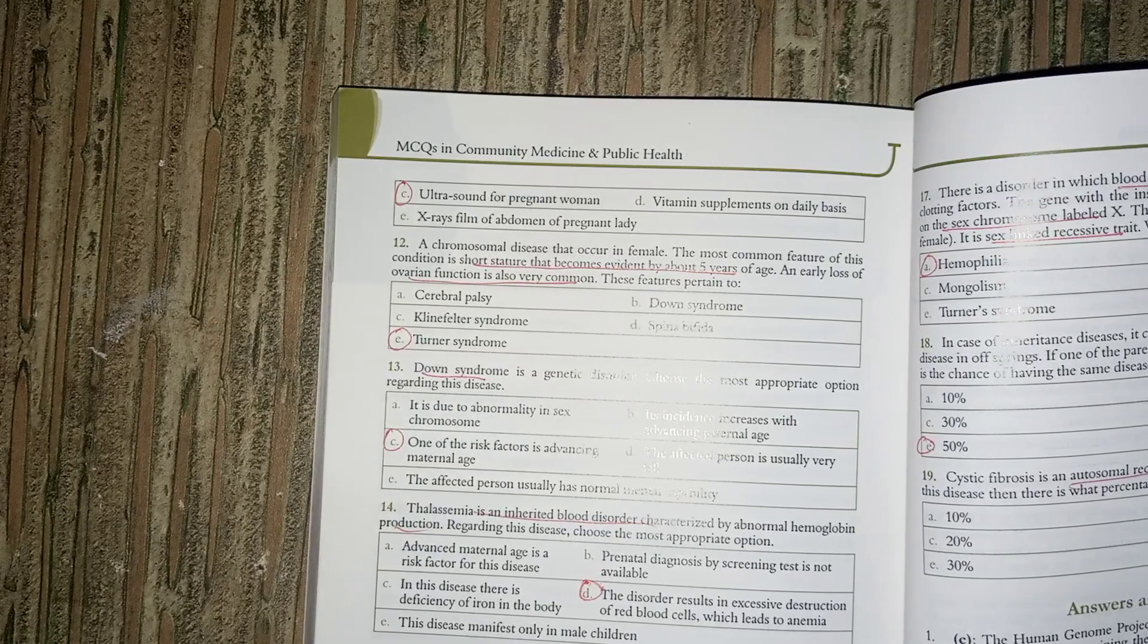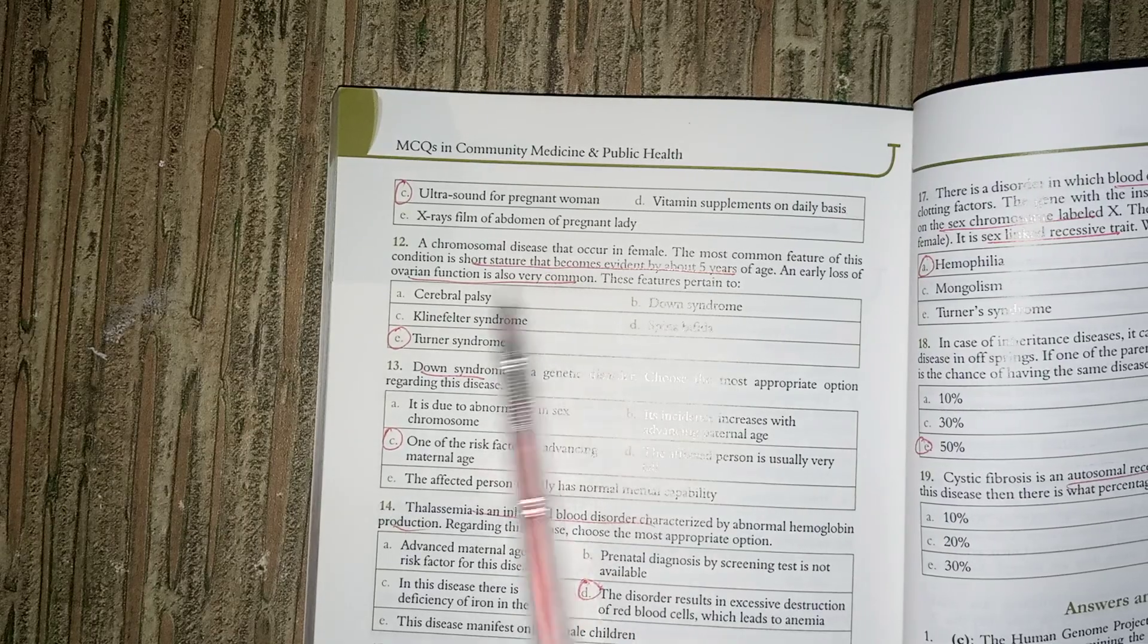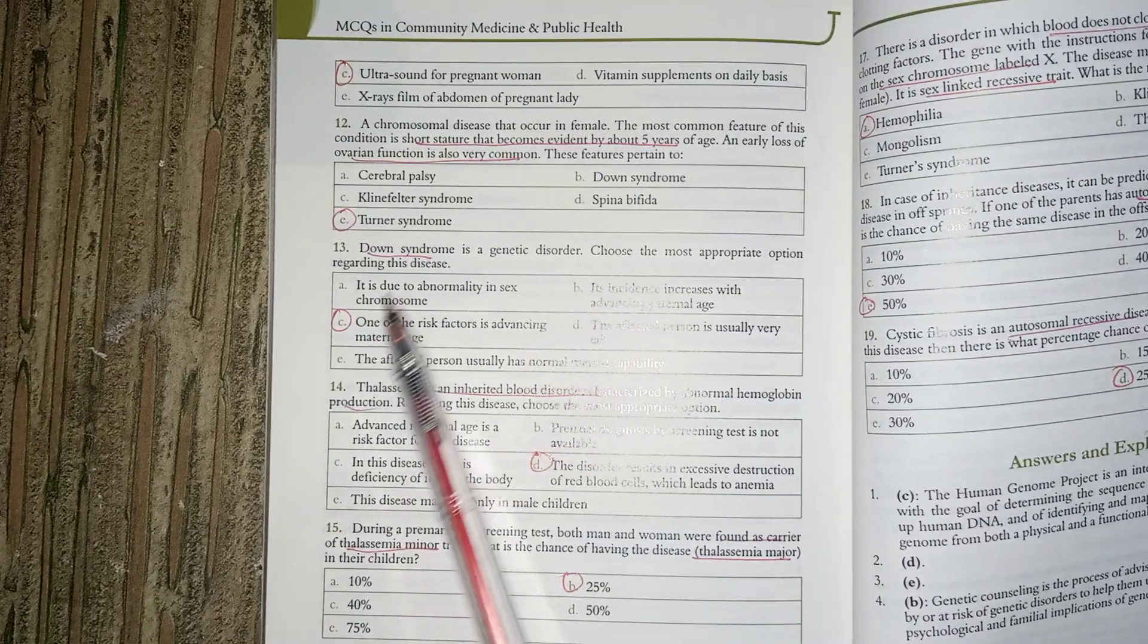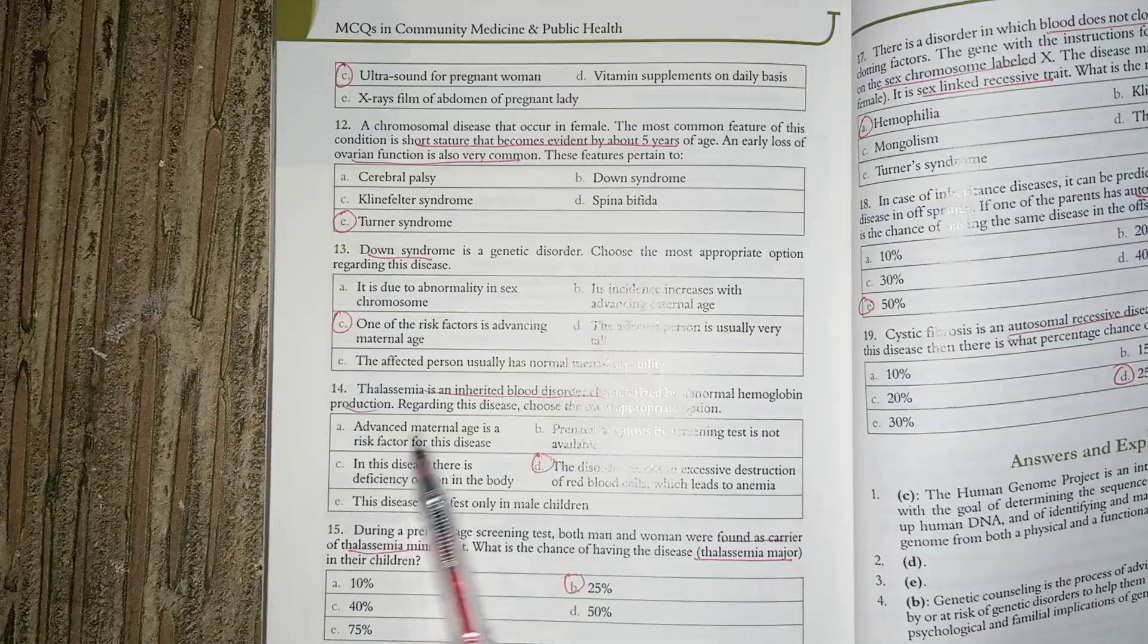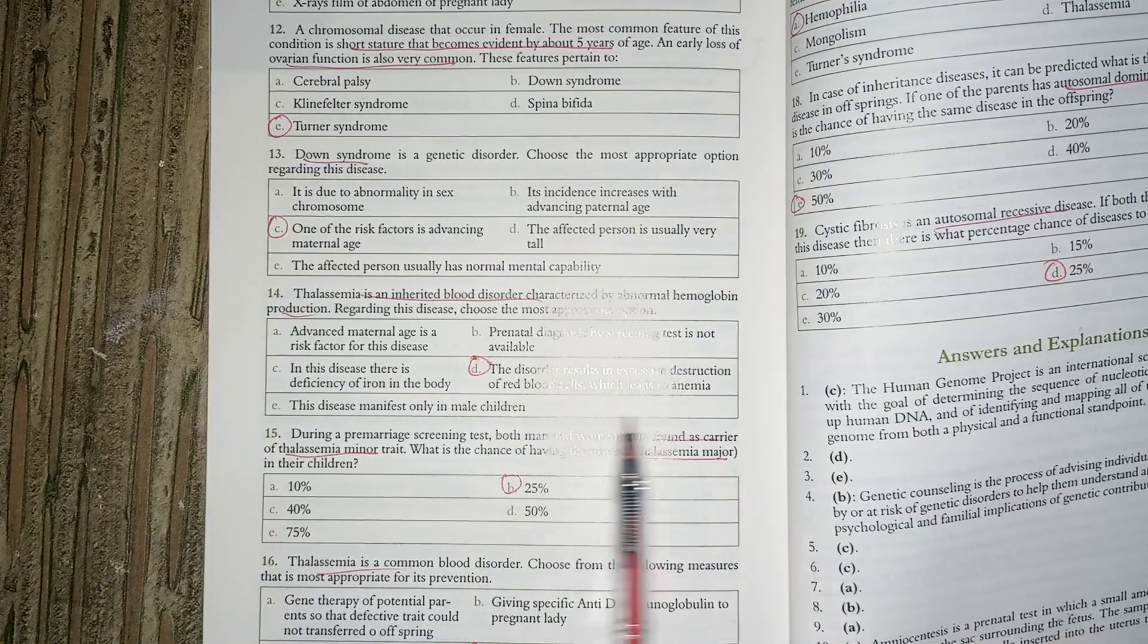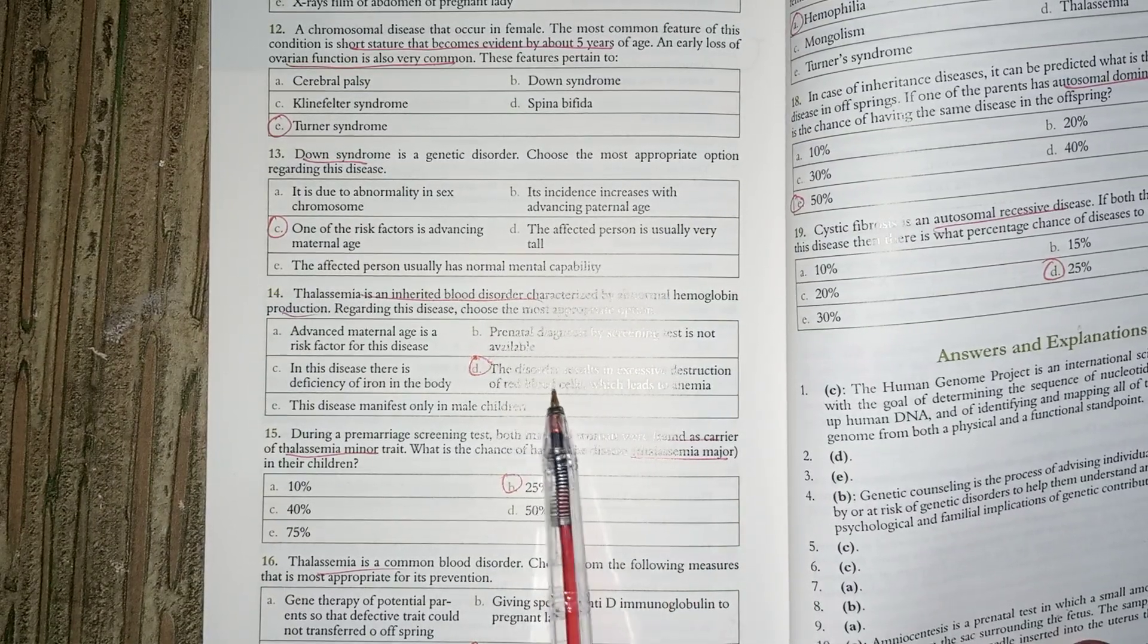X-rays can cause short stature and ovary dysfunction. Turner syndrome is one example. Down syndrome risk increases with maternal age. Thalassemia is autosomal recessive and causes destruction of blood cells.